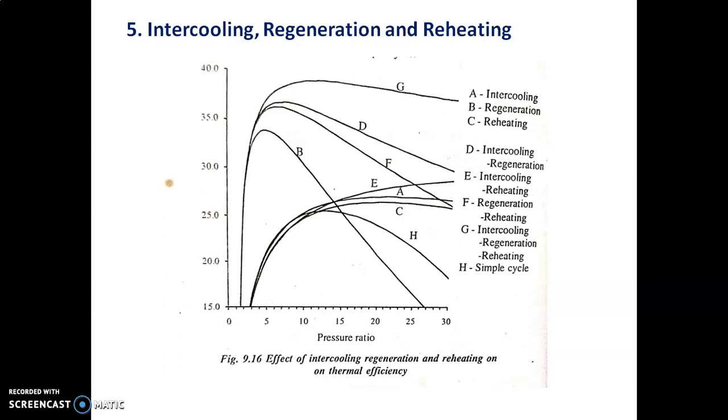Third is reheating. The work output of the turbine can be increased by increasing the enthalpy of gas entering the lower stage. This is achieved by expanding the gas in two stages with a reheater between the two stages. By expanding in stages with reheating in between, overall gas turbine system work output can be increased.